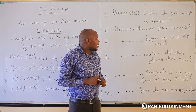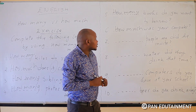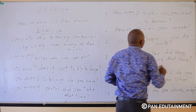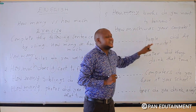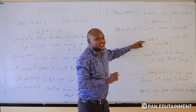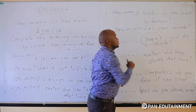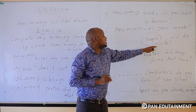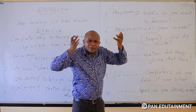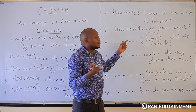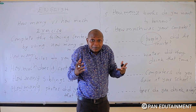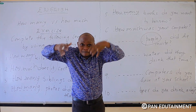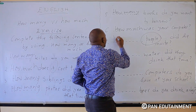Number seven: blank people did he invite? Here we have people — you can count people — so how many people did he invite? Don't say how much people. Say how many people.